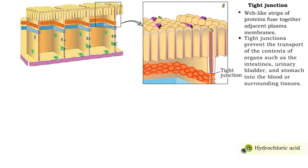Tight junctions are found in tissues lining the surface of organs and body cavities, such as the stomach, intestines, and urinary bladder.